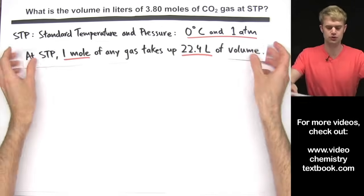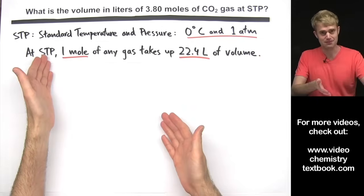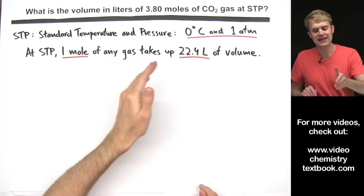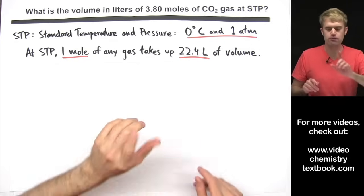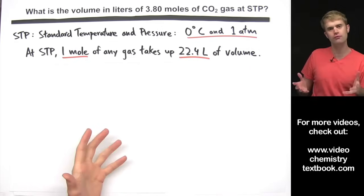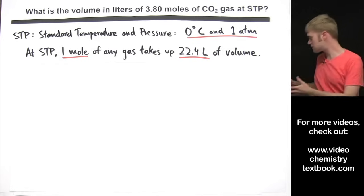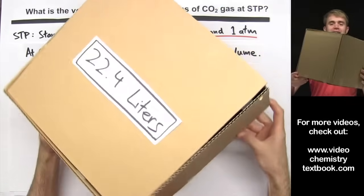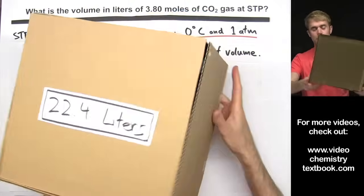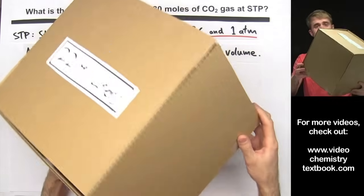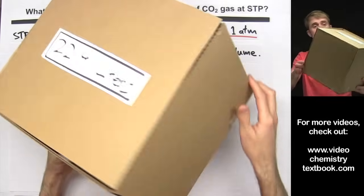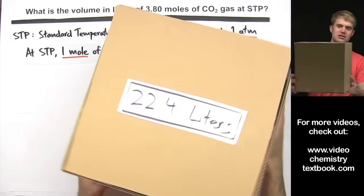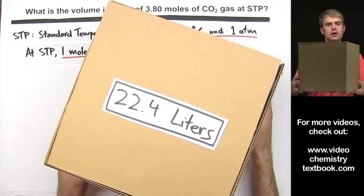Here's another piece of information that's really helpful. When we're at STP — at 0 degrees Celsius and 1 atm — one mole of any gas takes up 22.4 liters of volume. I made this box here to show how big 22.4 liters is. If we're at STP and filled this box with gas, we would have one mole of gas in those 22.4 liters.